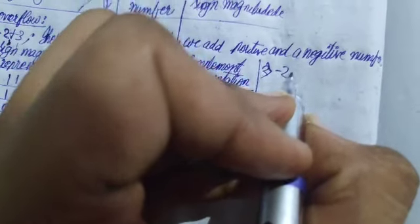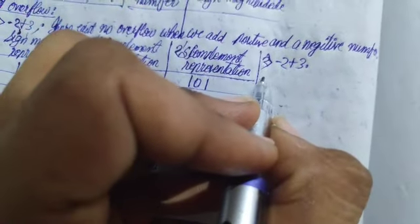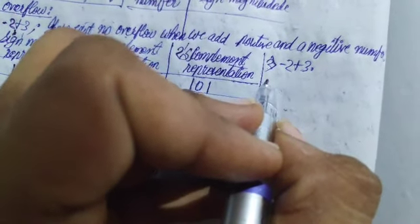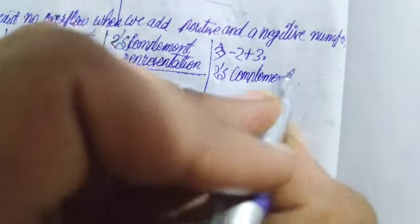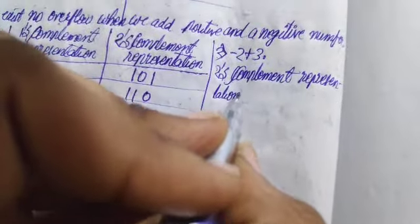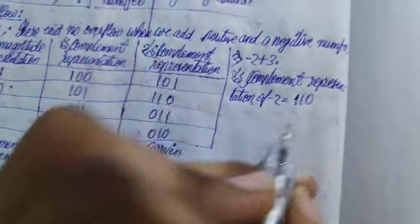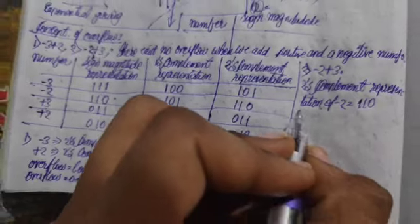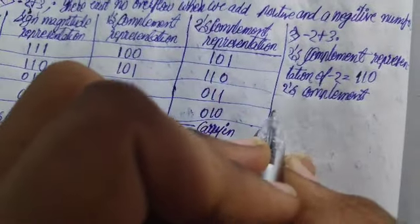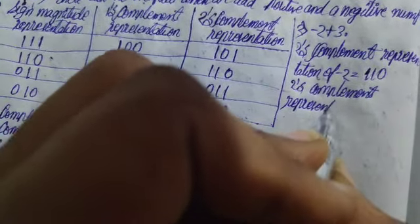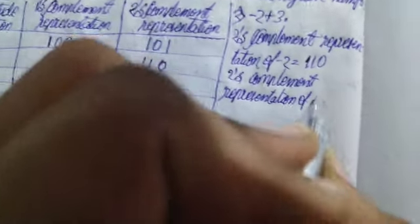For the second case we are going to add minus two plus three. Now for minus two, let's find the two's complement representation. The two's complement of minus two is going to be one one zero, and the two's complement representation of plus three is...